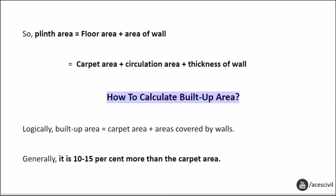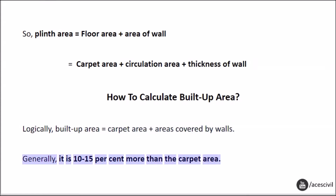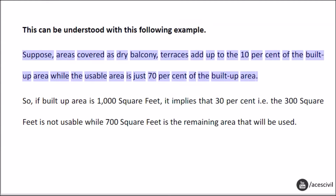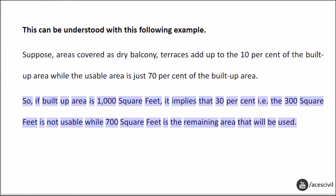How to calculate built-up area? Logically, built-up area equals carpet area plus areas covered by walls. Generally, it is 10–15% more than the carpet area. For example, suppose areas covered as dry balcony and terraces add up to 10% of the built-up area while the usable area is just 70% of the built-up area. So if built-up area is 1,000 square feet, it implies that 30% — i.e., 300 square feet — is not usable, while 700 square feet is the remaining area that will be used.